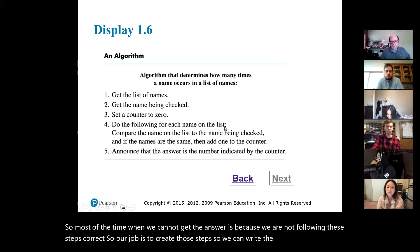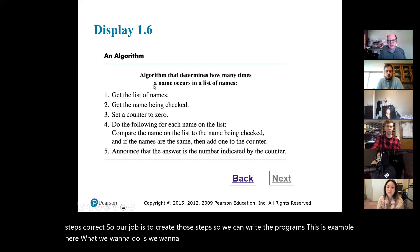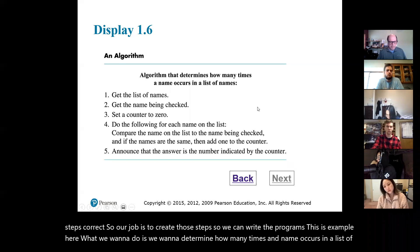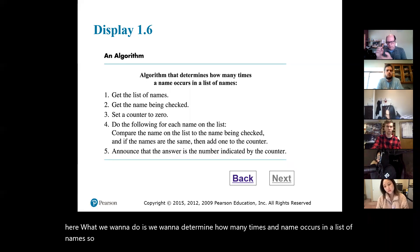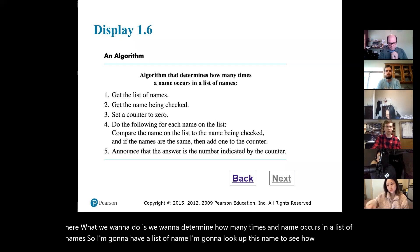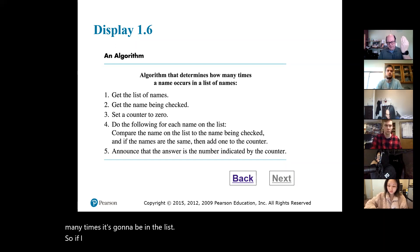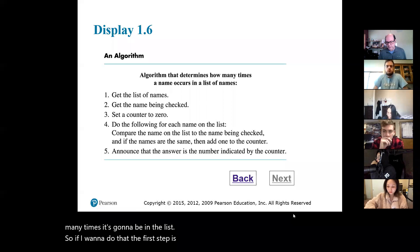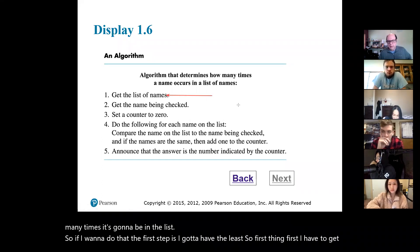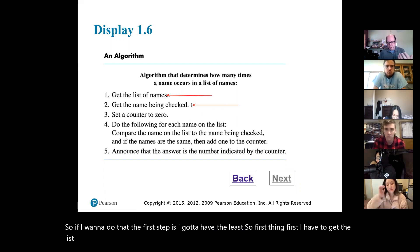Here's an example. What we want to do is determine how many times a name occurs in a list of names. I'm going to have a list of names and look up a specific name to see how many times it appears in the list. The first step is to get the list. Then I have to get the name that I want to check. These are going to be my inputs to my program — I need a list and I need a name.